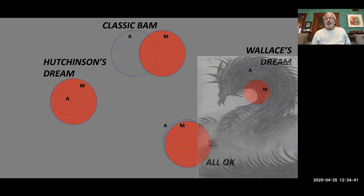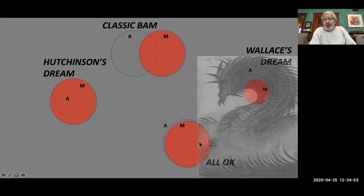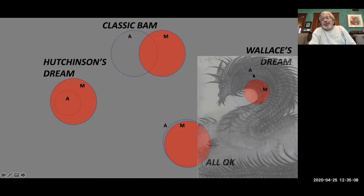Remember, we had these four configurations. We had a partial overlap, which is what we've called classic BAM. We had full overlap, which we could call 'all OK.' We had Hutchinson's dream, which is that everything is accessible and so species distributional limits are set by abiotic considerations. And Wallace's world, where accessibility really sets the limits of species distributions. Those are all caricatures and extremes, and as you will see, the distinctions between them are not black and white.